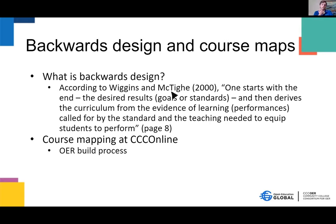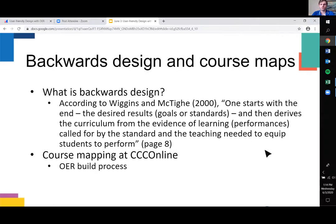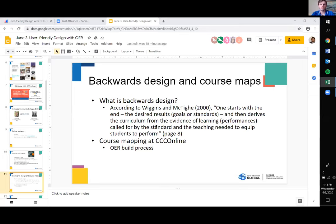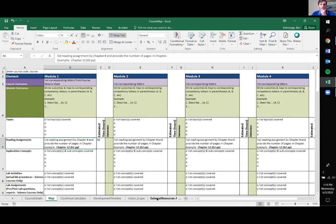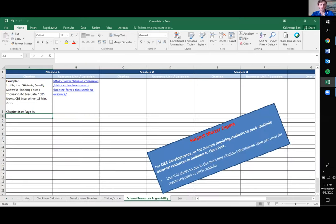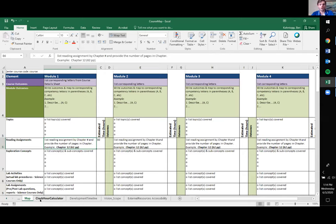What is backwards design? Straight from the source — Wiggins and McTigue: one starts with the end, the desired results — the goals or standards — and then derives the curriculum from the evidence of learning, the performances called for by the standard and the teaching needed to equip students to perform. For us at CCC Online, especially during OER builds, we have our subject matter experts utilize course maps. Our course map has various tabs at the bottom, and the most important ones for OER are the external resources and the map itself.